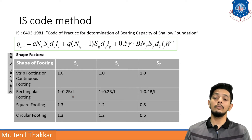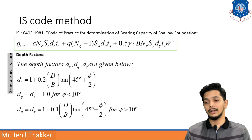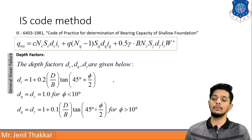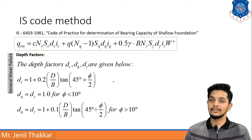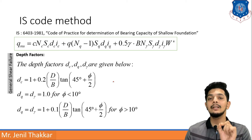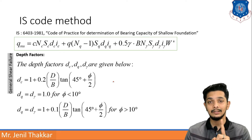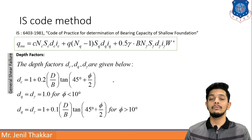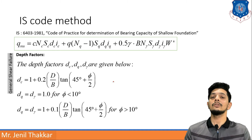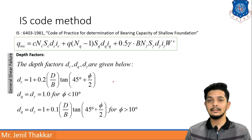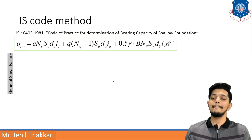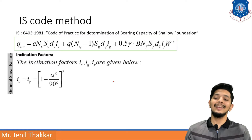For depth factors, dc = 1 + 0.2(D/B)·tan(45 + φ/2). For dq and dγ, they are equal to 1.0 when φ < 10 degrees. When φ > 10 degrees, a different formula is given by the IS Code. So there are two cases depending on whether φ is less than or greater than 10 degrees.